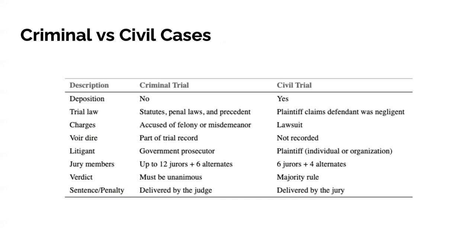Civil cases can be presented with depositions. Civil cases can be brought by an individual or an organization, referred to as the plaintiff, against an individual or another organization. Civil trials generally involve disputes over money; if successful, the plaintiff is awarded money by the jury. A civil trial identifies whether an entity failed to act reasonably and prudently under a certain set of circumstances — the preponderance of the evidence, or most of the evidence presented, indicates which party was in the right or wrong.